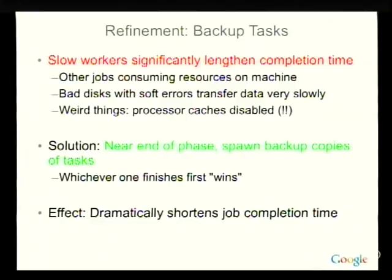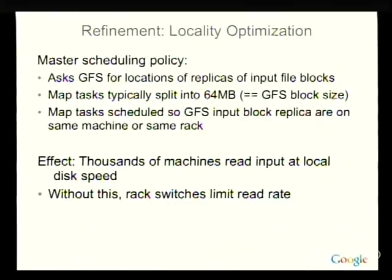Another refinement handled automatically by the framework is backup tasks. If you have slow workers — maybe running a lot of other jobs or with a congested network — they can lengthen the completion time a lot, not because the input data is slow. Near the end of either the map or reduce phase, we spawn backup copies of slow tasks and actually run multiple copies of them. Whichever finishes first wins. This reduces job completion time tremendously. There's also a locality optimization: the scheduling policy asks GFS for locations of input file block replicas and tries to schedule map tasks local to that machine or at least on the same rack.